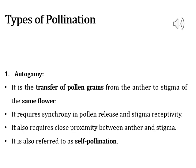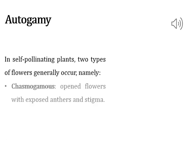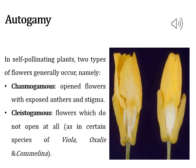Plants like Viola (common pansy), Oxalis, and Commelina produce two types of flowers. One is the chasmogamous flower and another is the cleistogamous flower. Chasmogamous flowers are similar to flowers of other species with exposed anthers and stigma. Cleistogamous flowers do not open at all — anthers and stigma lie close to each other. They are autogamous: when anthers dehisce inside the flower bud, pollen grains come in contact with the stigma. Cleistogamous flowers produce assured seed set even in the absence of pollinators.